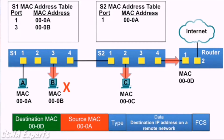PCC gets the Ethernet frame, and because the destination MAC address does not match its own MAC address, it does not accept the rest of the Ethernet frame. The router receives the Ethernet frame, and because the destination MAC address does match its own MAC address, it accepts the rest of the frame.